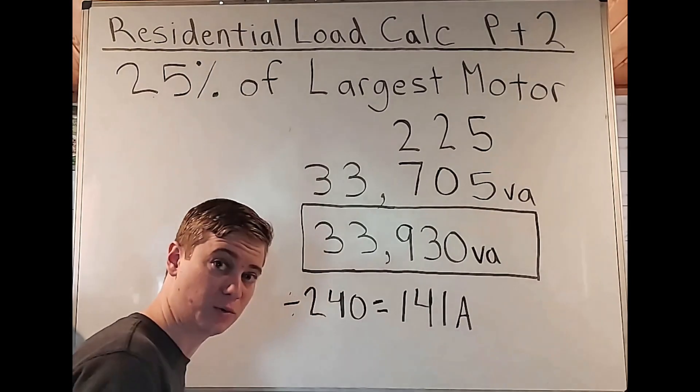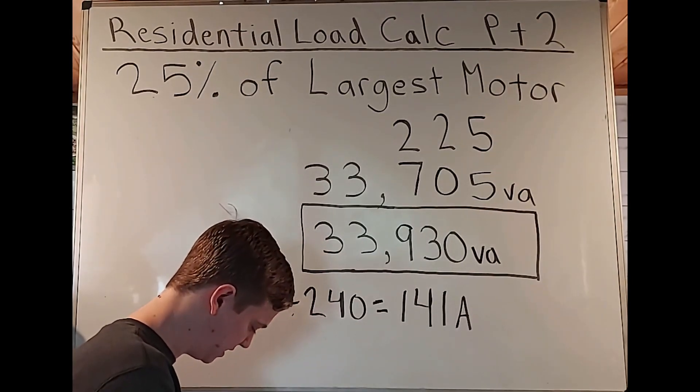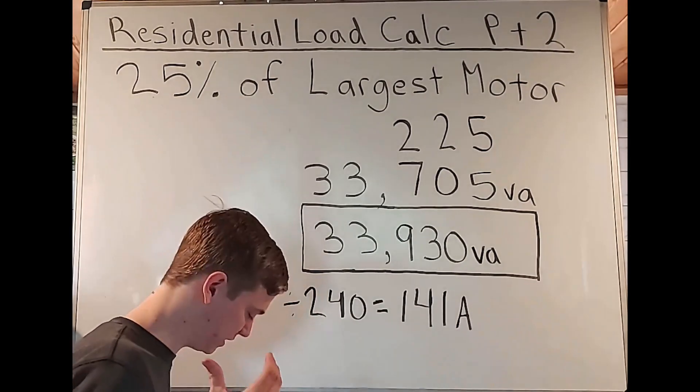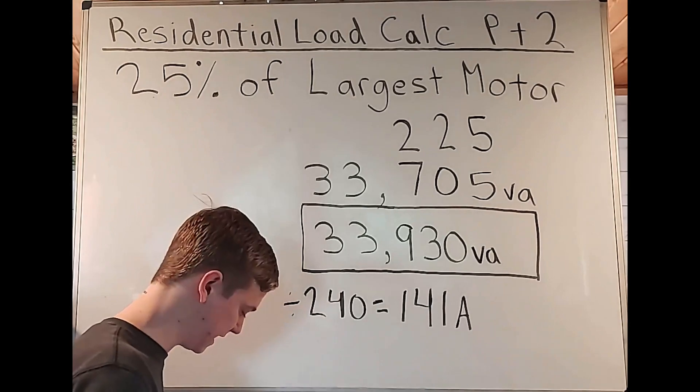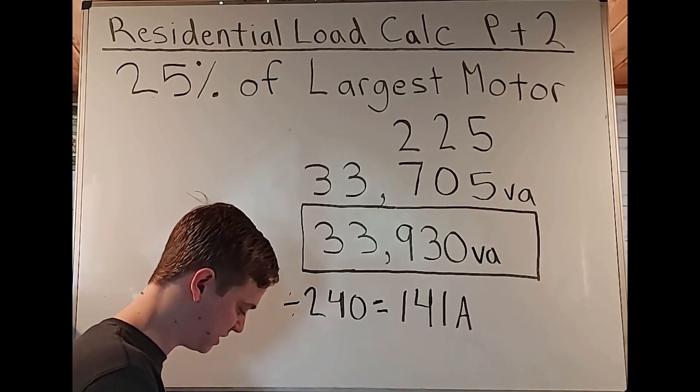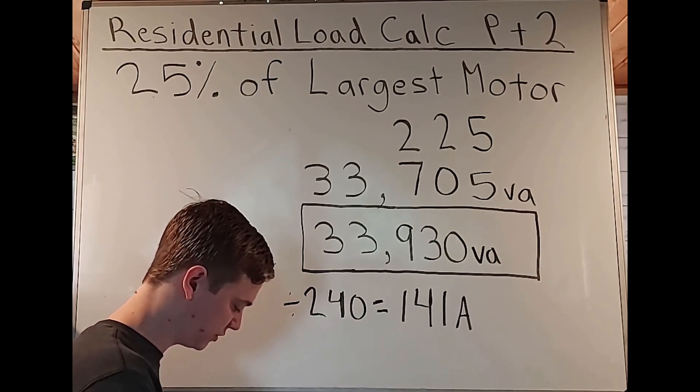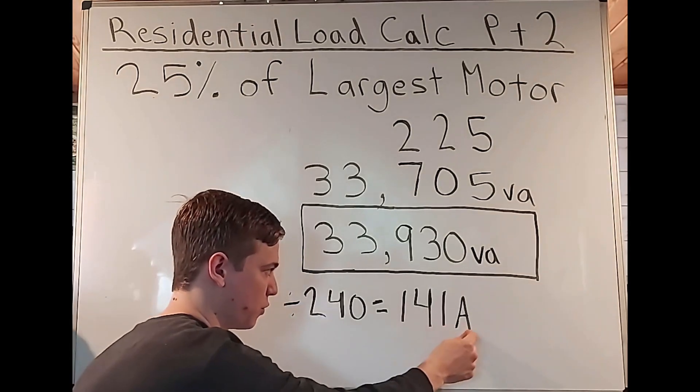So the first rule is that the conductors that are being protected are not a part of a branch circuit that are supplying more than one receptacle. And that's talking about the actual conductors being protected. So in basically all situations, you don't really need to think about that. But then the second one is probably the most important here, other than the 800 amps.